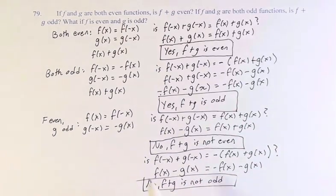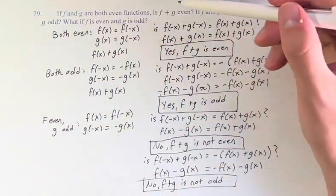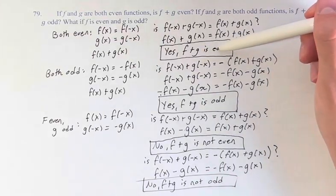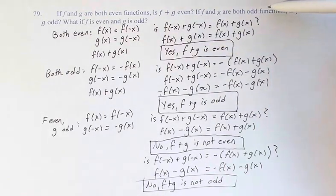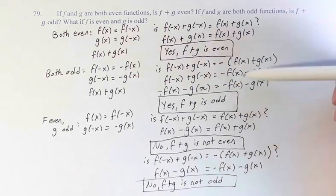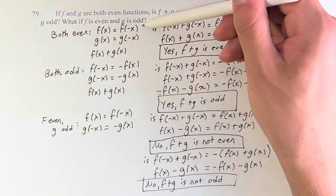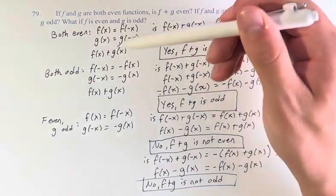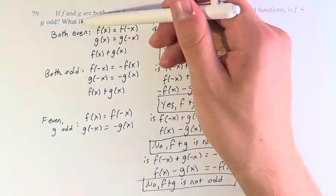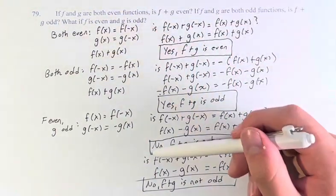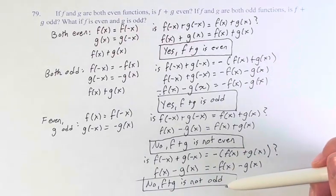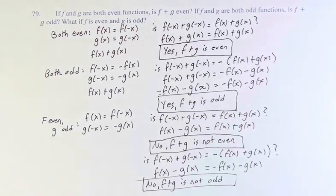So, in conclusion: if f and g are both even functions, then yes, f plus g is even. If f and g are both odd functions, yes, f plus g is odd. However, if f is even and g is odd — and by analogy, if g is even and f is odd — f plus g is not even, and it is also not odd.